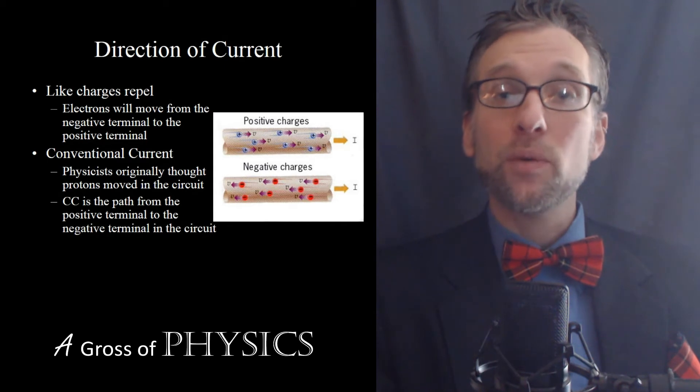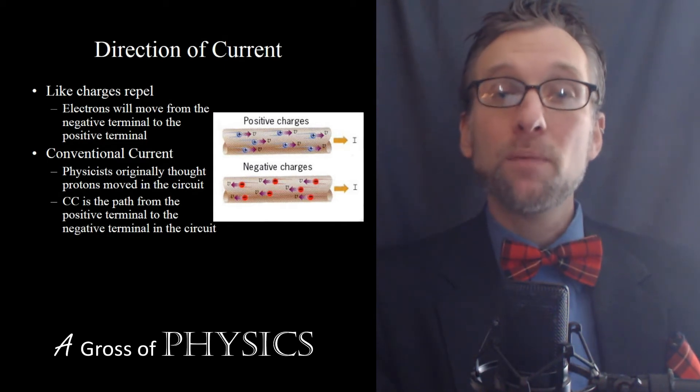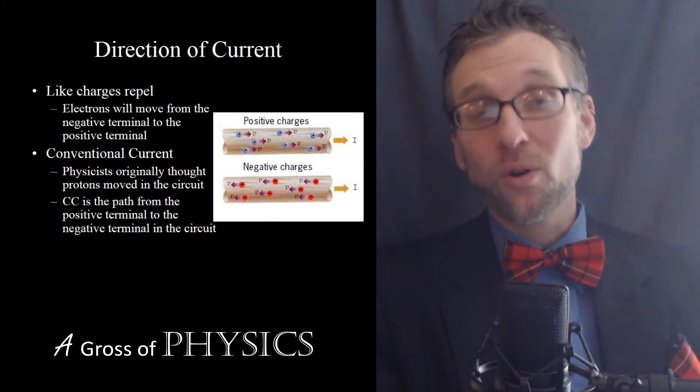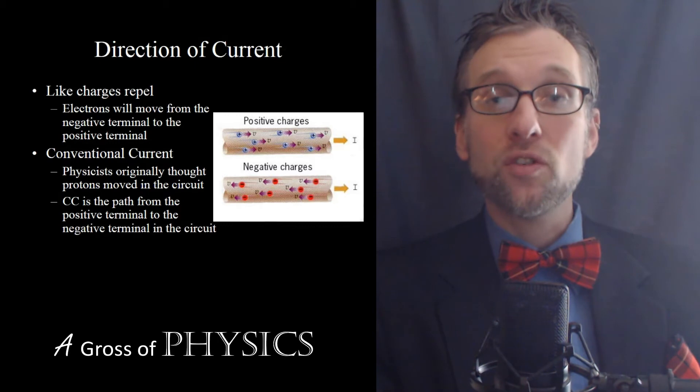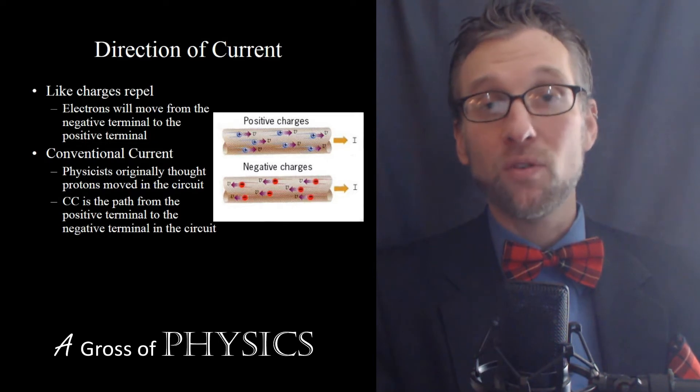Eventually we found out that the electrons were the ones that moved, but so many people were stuck in their own ways, their old ways, about the protons moving that they didn't want to change their textbooks and they didn't want to change the way they thought of electricity. So we ended up with two different directions for the current to flow in a circuit: the real way, which is what we call the electron flow, which is from negative to positive, or the protons moving, which is what we now call conventional current.